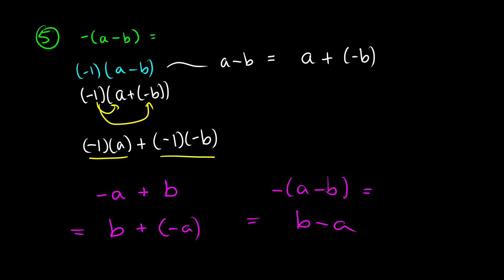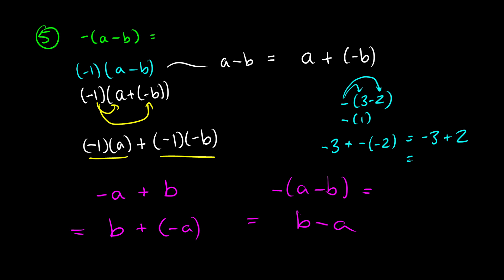With a real example: negative (3 minus 2). Doing the brackets first gives negative 1. We can also distribute: negative 3 plus negative negative 2, which is negative 3 plus 2, giving us negative 1 as a final result. No matter which way we do this, we end up with the exact same result.